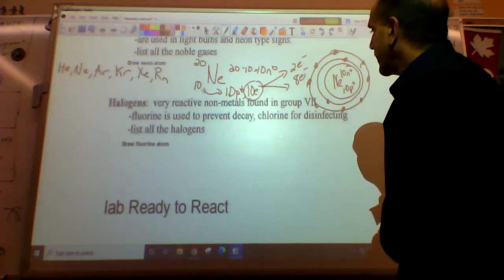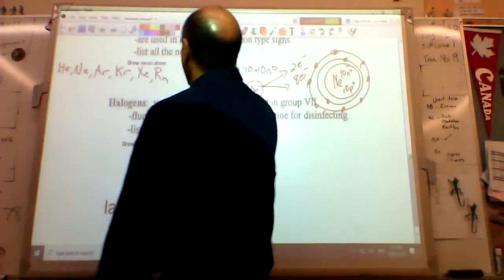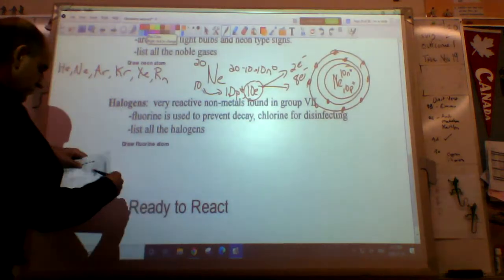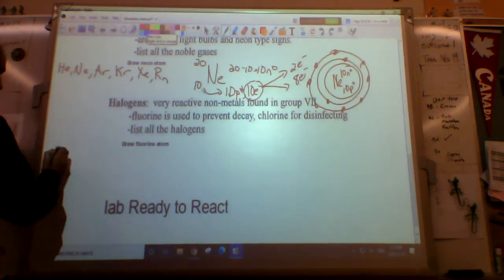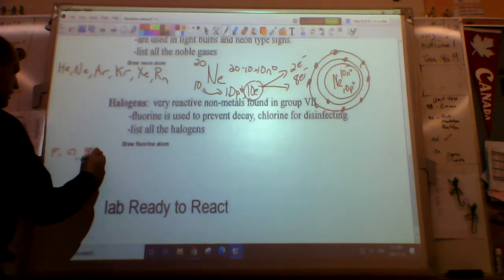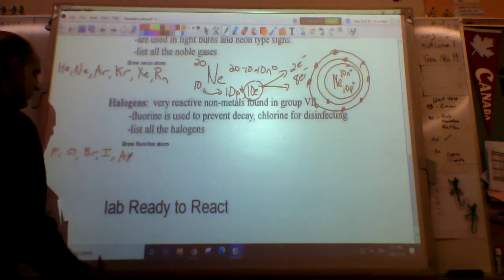Let's go to our next one, the halogens. Very reactive non-metals found in group seven or 17. Fluorine is one of them. I'm going to list them - I've got fluorine, chlorine, bromine, iodine, and astatine.